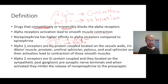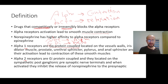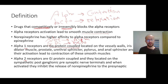We have two types of alpha receptors: alpha-1 and alpha-2. Alpha-1 receptors are GQ protein-coupled receptors and are located on the vessel walls, iris dilator muscle, prostate, urethral sphincter, pylorus, and anal sphincter. Their activation leads to contraction of these smooth muscles.